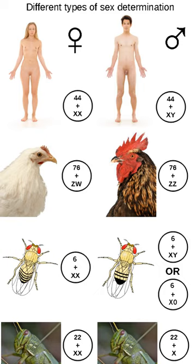Because the use of ZW sex determination is varied, it is still unknown how exactly most species determine their sex. However, reportedly the silkworm Bombyx mori uses a single female-specific piRNA as the primary determiner of sex. Despite the similarities between the ZW and XY systems, these sex chromosomes evolved separately. In the case of the chicken, their Z chromosome is more similar to humans' autosome 9. The chicken's Z chromosome also seems to be related to the X chromosome of the platypus.